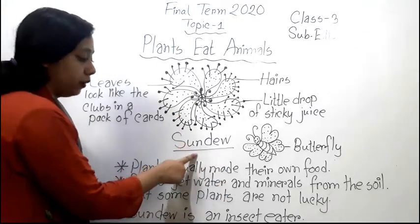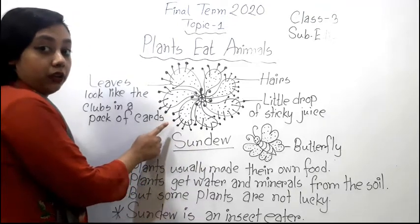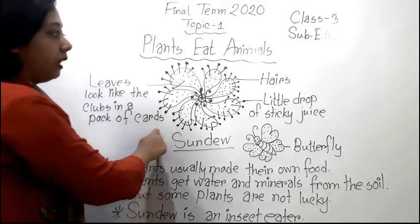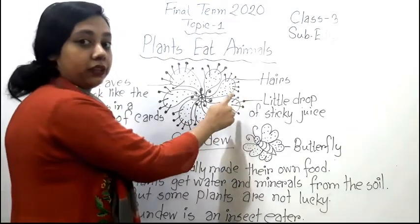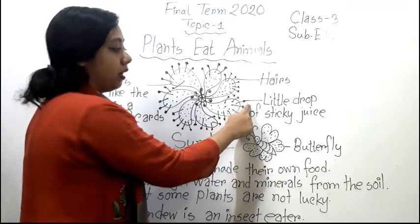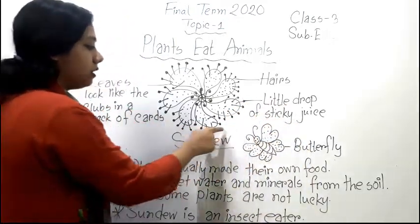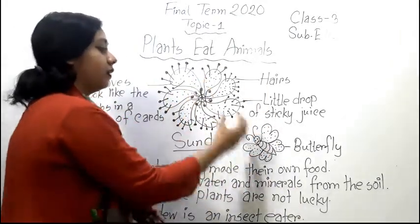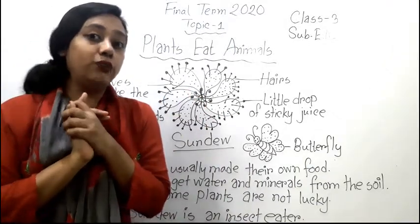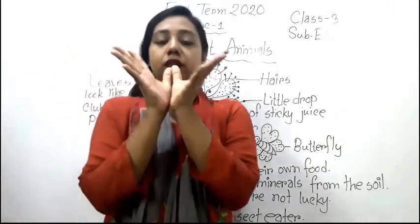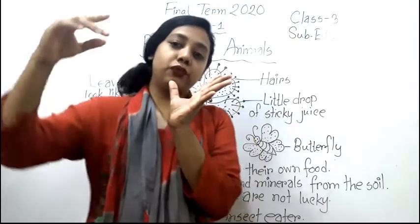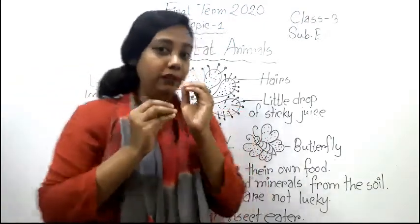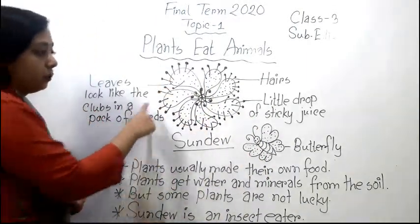The name of this plant is the sundew. The sundew's leaves look like the clubs in a pack of cards. It has many hairs on the leaves and at the end of each hair there is a little drop of sticky juice, which makes it look very beautiful. When a butterfly comes to sit on it, the butterfly gets stuck on the sticky juice and cannot fly away. Slowly the sundew's leaves begin to close, like this, and it eats the butterfly.